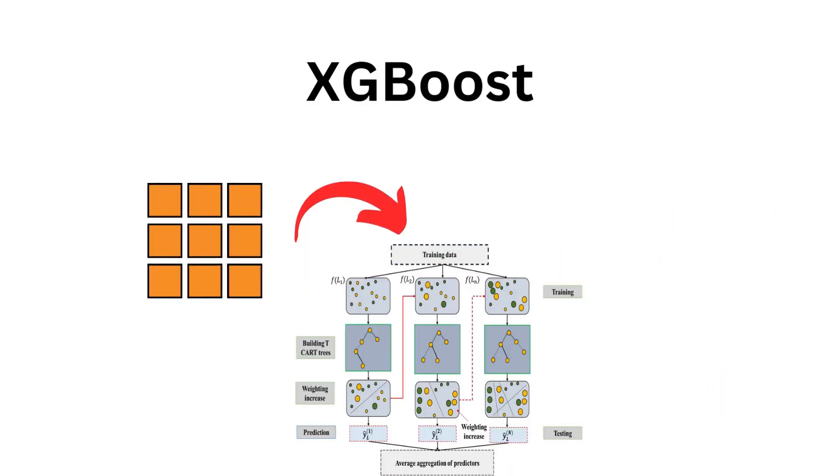Anyway, so for tabular data, the training data in matrix form is fed into the network, or in this case, XGBoost.